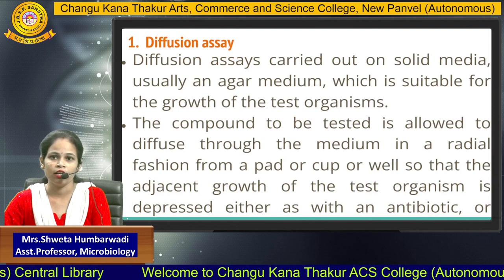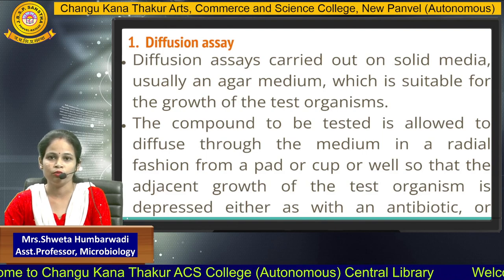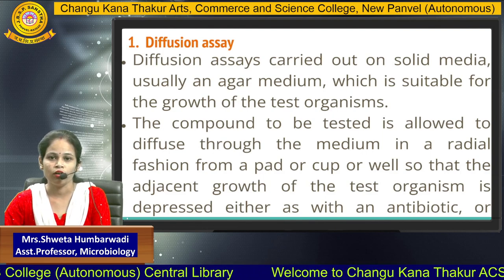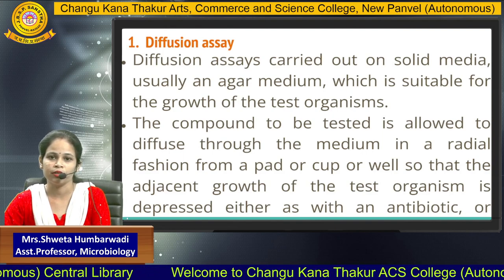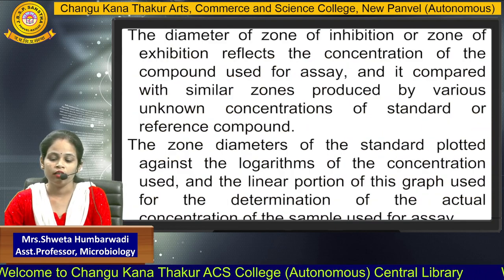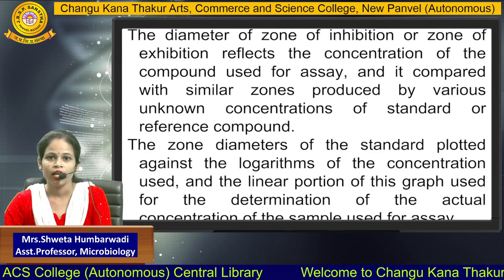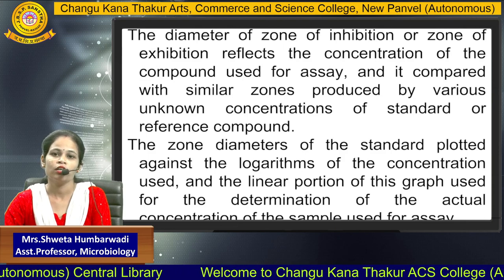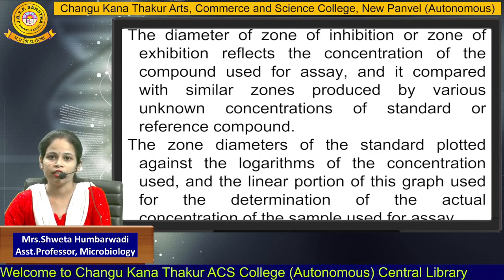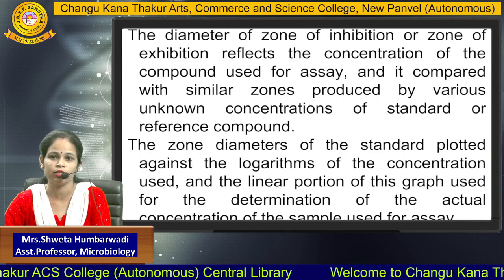Diffusion assay is carried out on solid media, usually on agar medium suitable for the growth of the test organism. The compound to be tested is allowed to diffuse through the medium in a radial fashion from a pad, cup, or well, so that adjacent growth of the test organism is depressed — either as with an antibiotic, showing an inhibition zone, or as with a vitamin, showing a zone of stimulation where the vitamin acts as a growth factor. The zone diameters of the standard are plotted against the logarithms of concentration, and the linear portion of this graph is used to determine the actual concentration of the sample to be assayed.